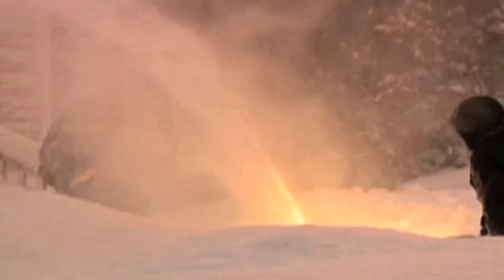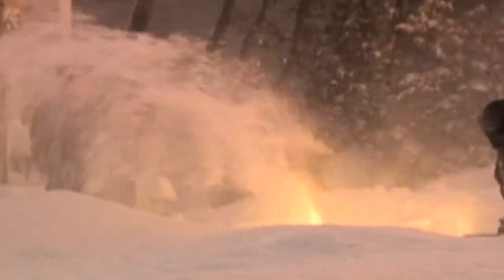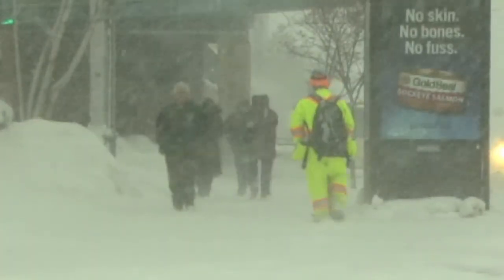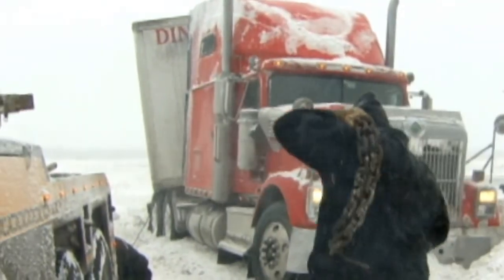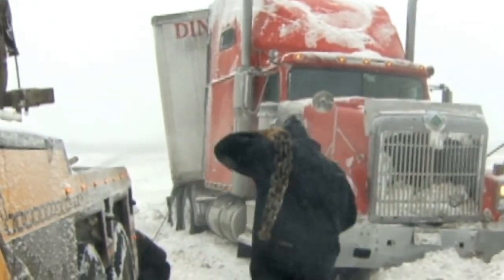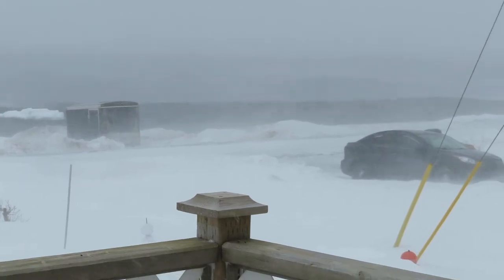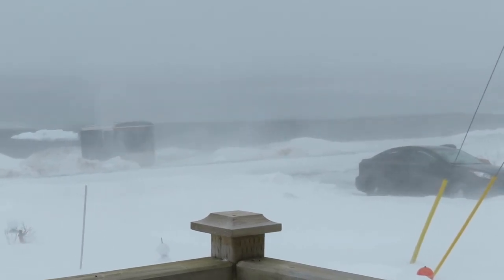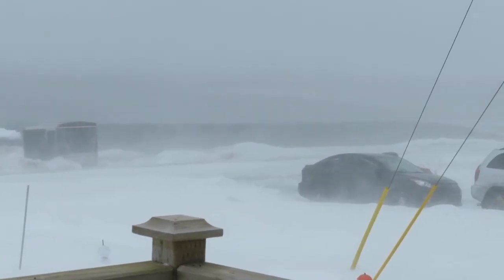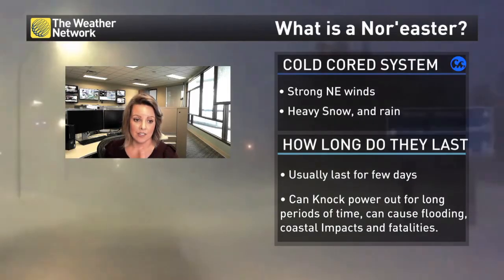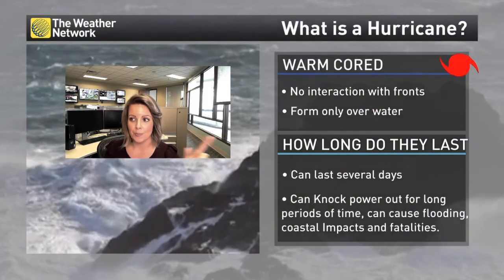A nor'easter is a cold core system, meaning it interacts with different types of temperature boundaries — we've got a cold front and a warm front. There's always a persistent northeasterly wind with the nor'easter, and they can feature heavy rain and heavy snow. How long do they last? Usually a few days, sometimes several, and they can knock out power and cause flooding and coastal impacts.